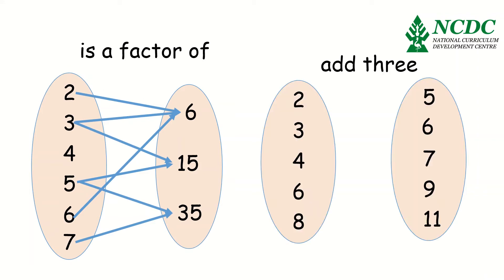Another example, where we have the relation statement as add 3. And we have the first set of values and the second set. 2, add 3, gives us 5. 3, add 3, gives us 6, and so on. 8, add 3, will also give us 11.